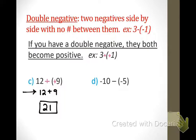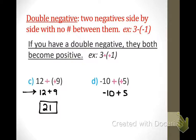Next: negative 10 minus negative 5. Do I have a double negative? Yes — two negatives side by side with no number in between them, so they both turn into positives. Rewriting it: negative 10 plus 5. Now this is a normal integer problem. Do I have same sign or different sign? Different sign, so I subtract and take the sign of the larger number. What's 10 minus 5? 5. Positive or negative? Negative — because 10 was the larger number. So the answer is negative 5.